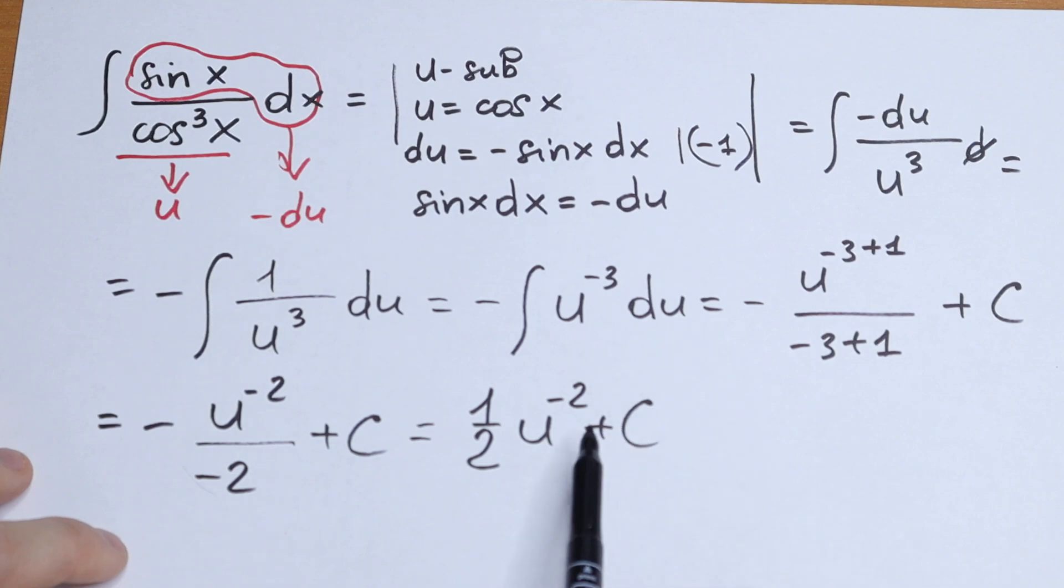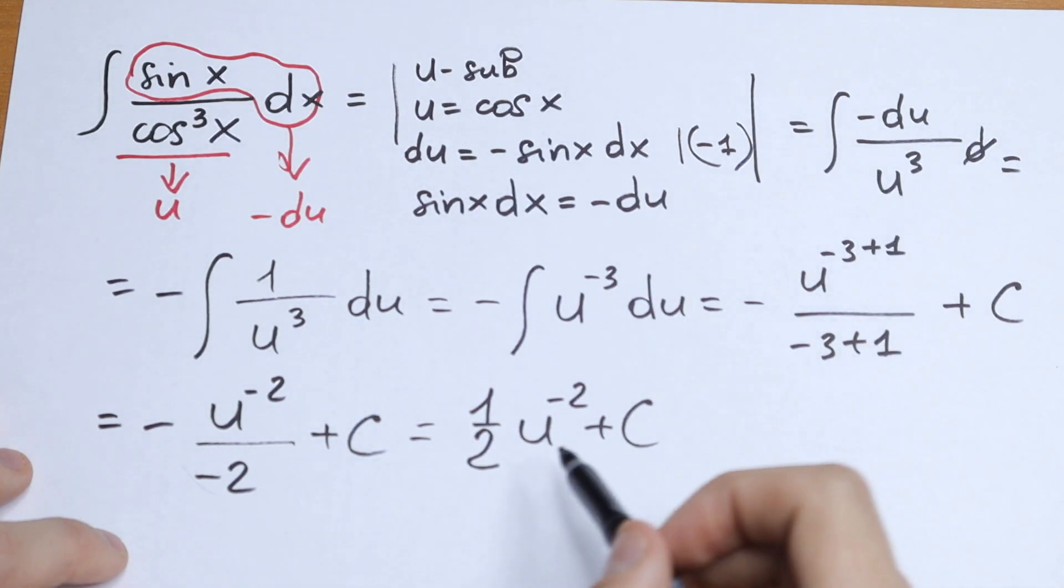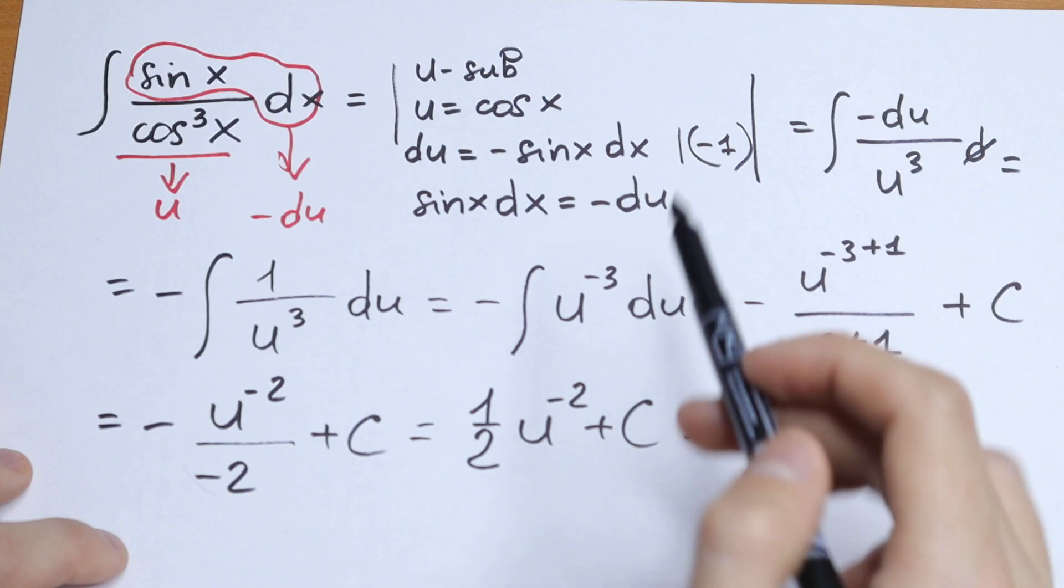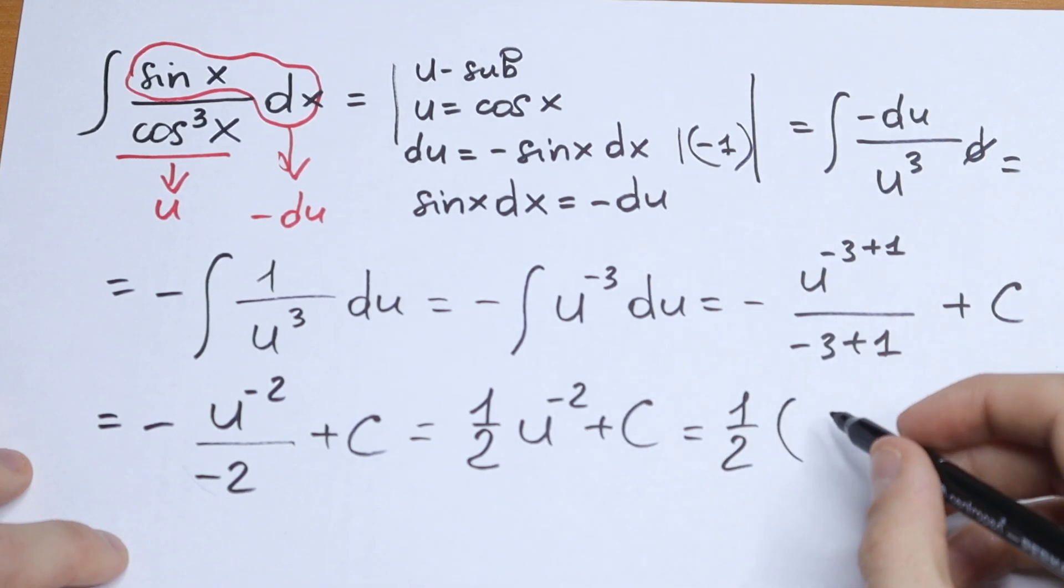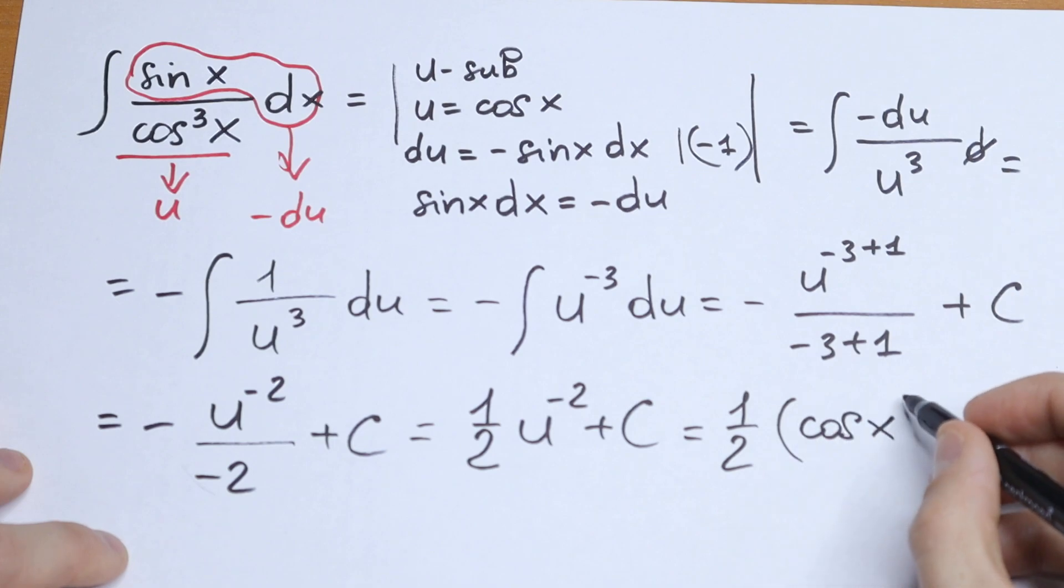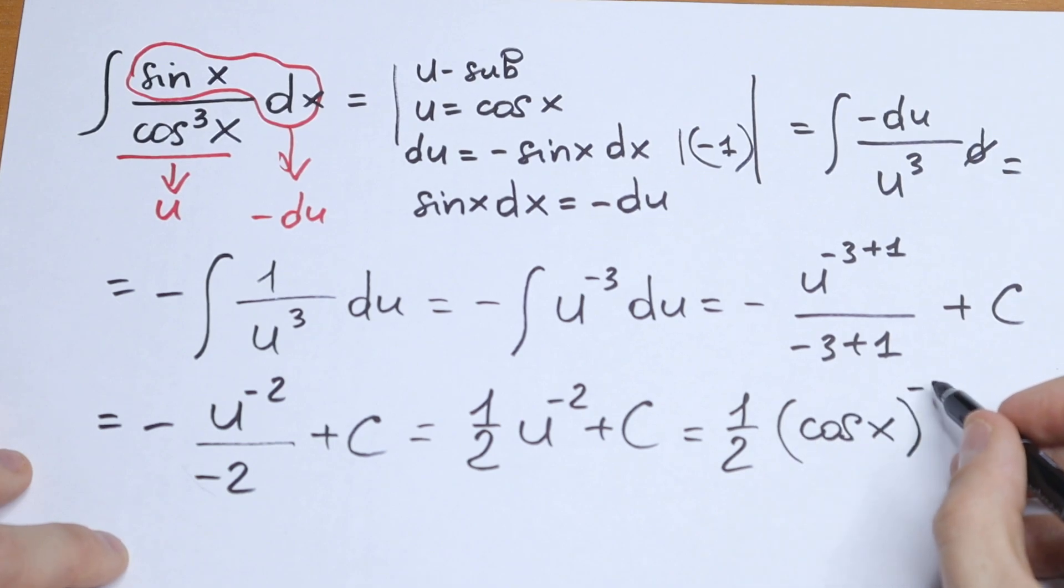And let's go to our substitution. So u equals cosine x. So we need to put our cosine instead of this u. So we will have one half, and in parentheses we will have cosine x to the power minus 2, plus c.